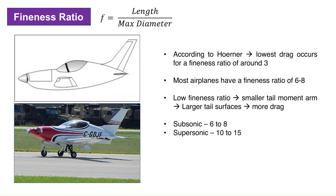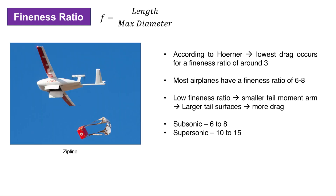An example of this is the Quest Air Venture. However, there is an issue with a low fineness ratio of 3: the tail moment arm is small, and therefore larger tail surfaces are needed for the required tail volume coefficients. This leads to increased wetted area, which increases drag. An alternative is adding a tail boom to a low fineness ratio fuselage pod, in order to increase the tail moment arm without increasing the wetted area a lot. This can be seen on many UAVs and gliders.